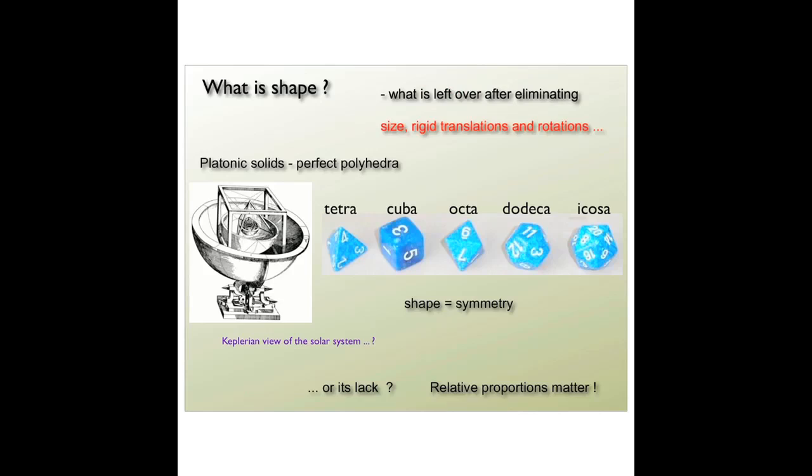And the ancients, when they thought about shape, really thought about symmetry. So this is a picture originally due to Kepler and Kepler viewed the solar system using ideas of shape and in particular using ideas of shape associated with perfect objects,